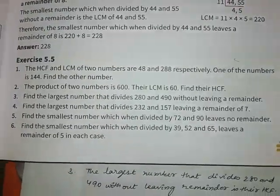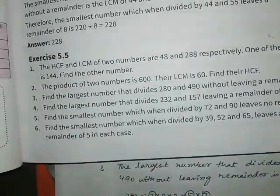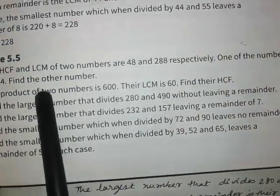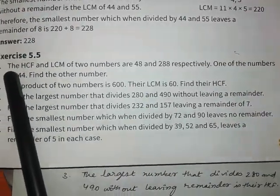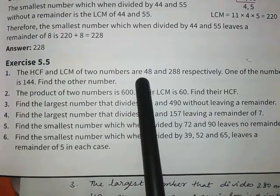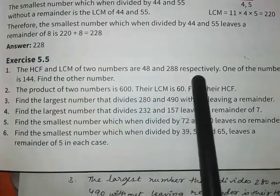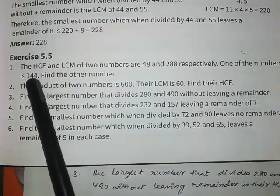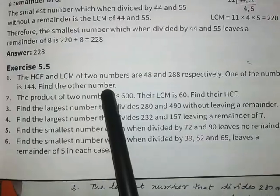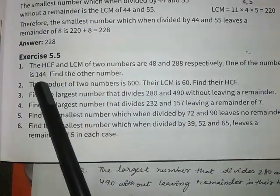Let's start with the first question of Exercise 5.5. The HCF and LCM of two numbers are 48 and 288 respectively. One of the numbers is 144. We have to find the other number.